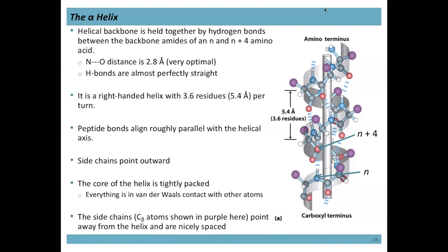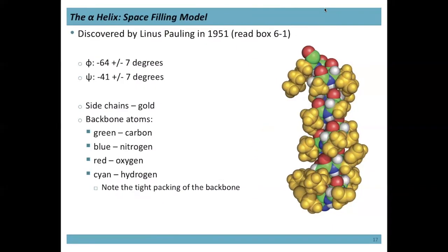The side chains in the alpha helix point outwards from the helix. The interior ends up very tightly crowded, with atoms in van der Waals contact. The amino acids in an alpha helix have phi and psi angles of approximately negative 64 and negative 41 degrees (plus or minus 7 degrees), so they don't deviate much — giving a very regular arrangement along the backbone.